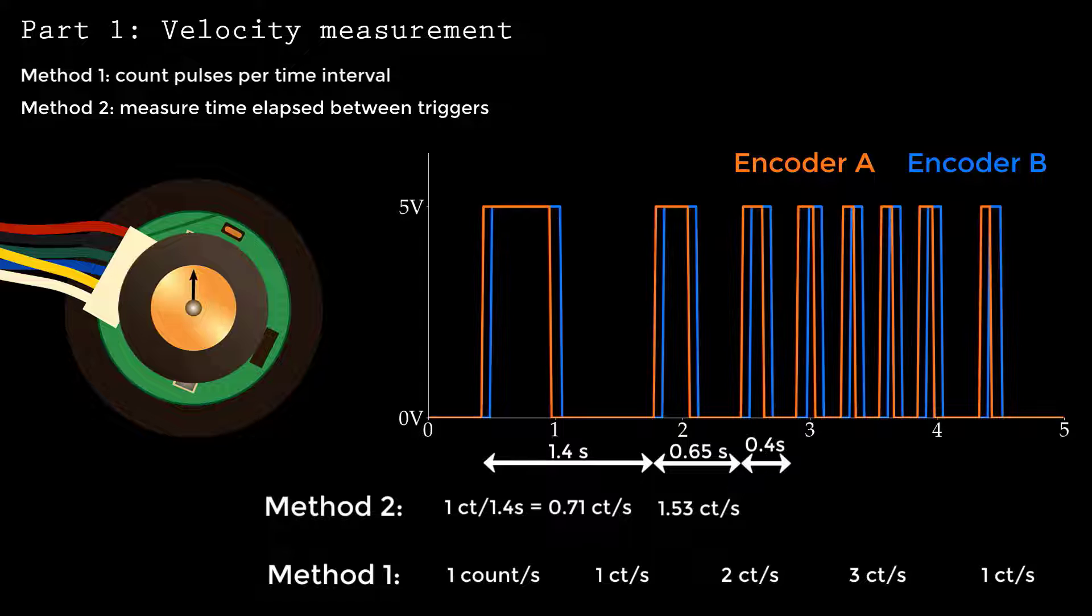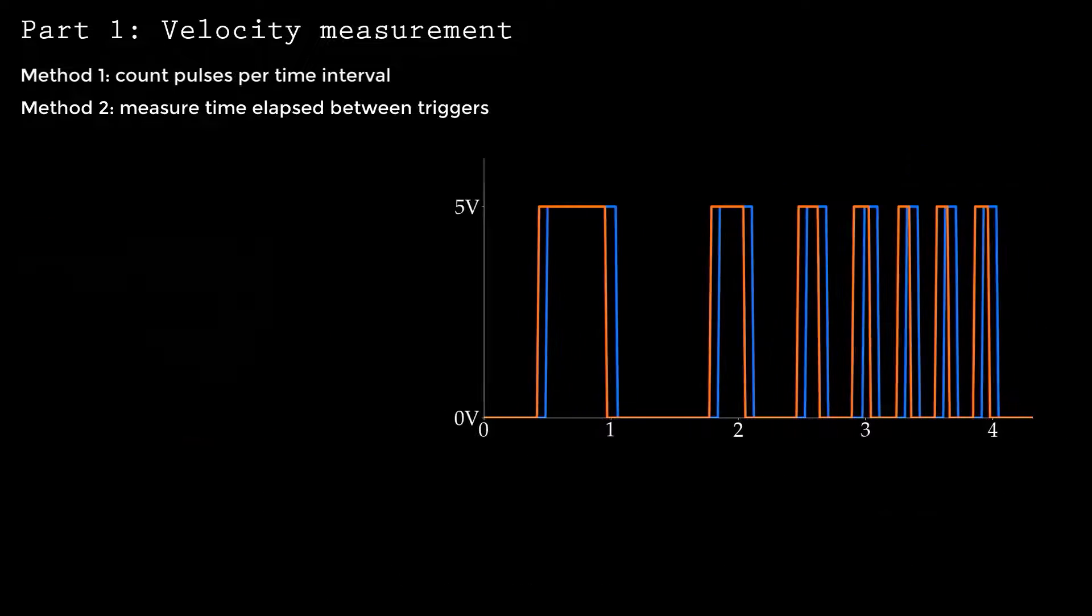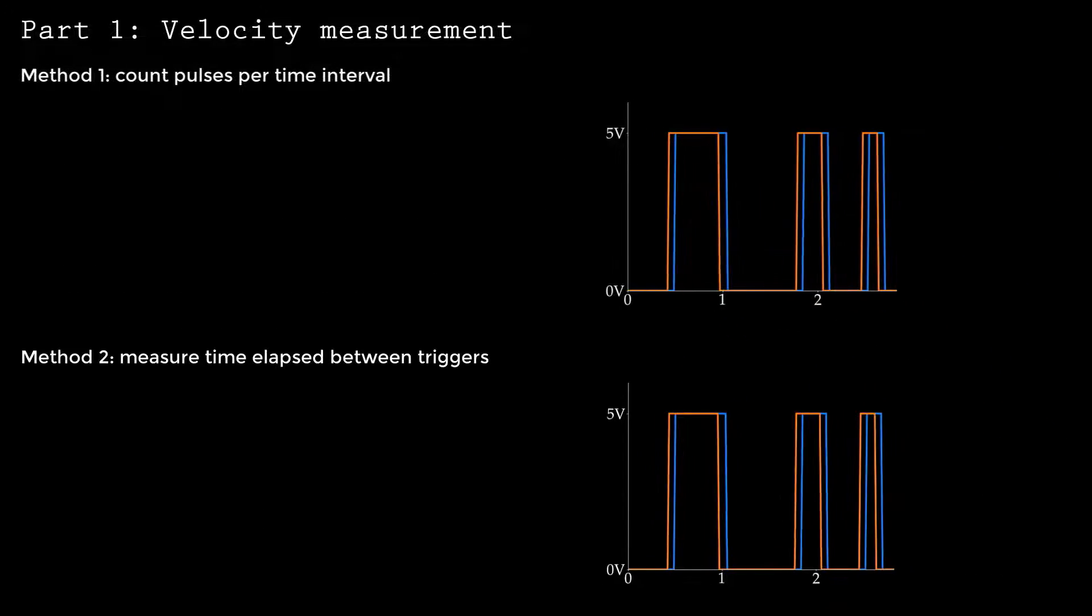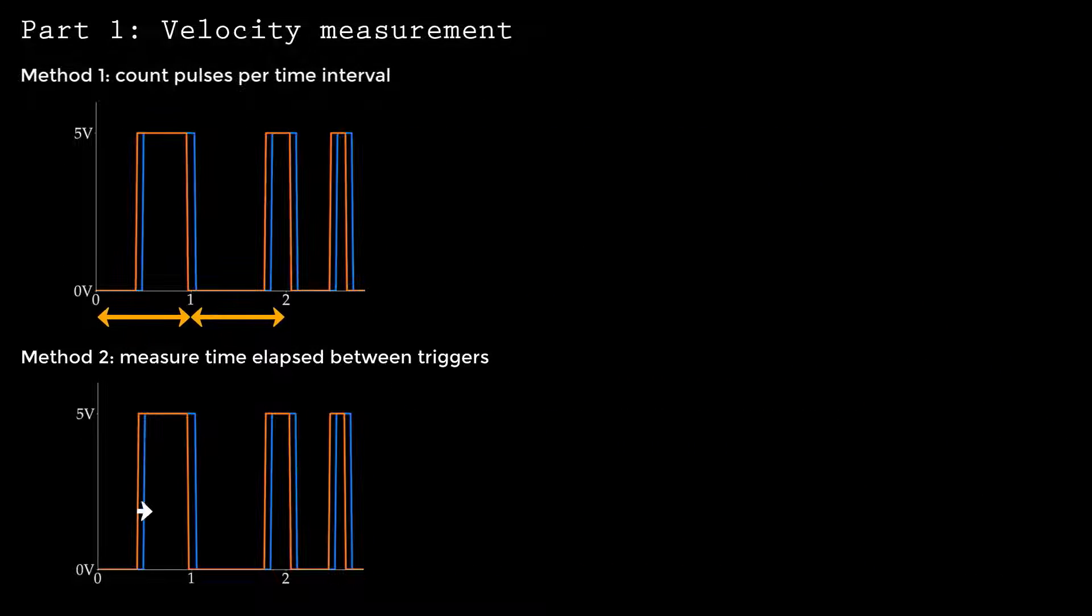The next interval is shorter, so the speed measurement increases to 1.53 counts per second. You can see that this second method more accurately computes the speed. However, this method introduces other issues that are not immediately obvious. We'll get to that later.